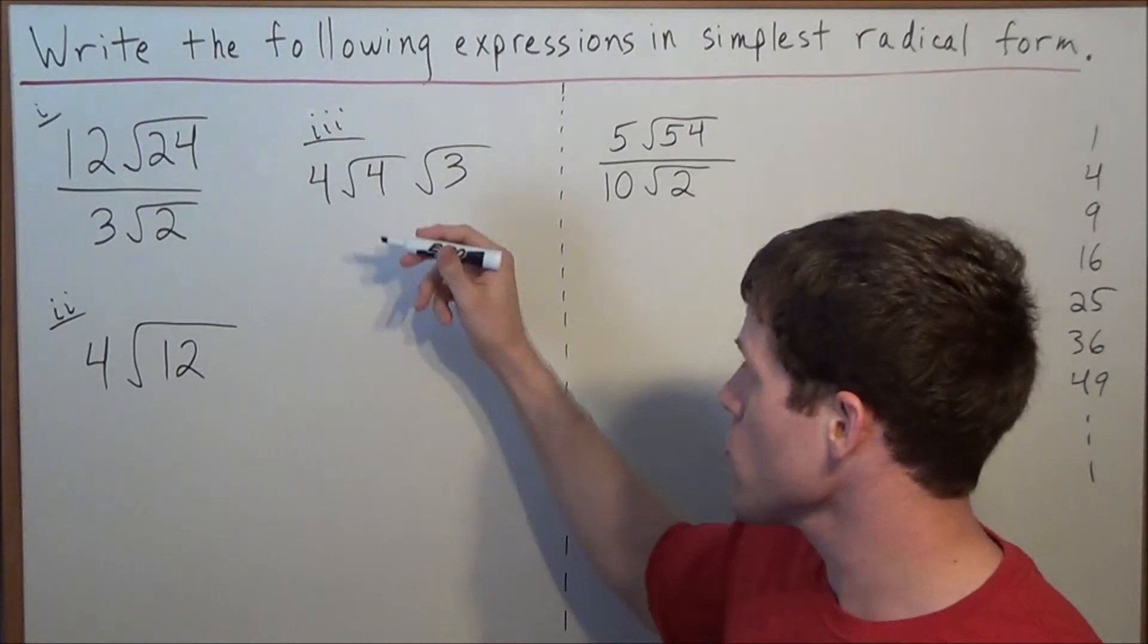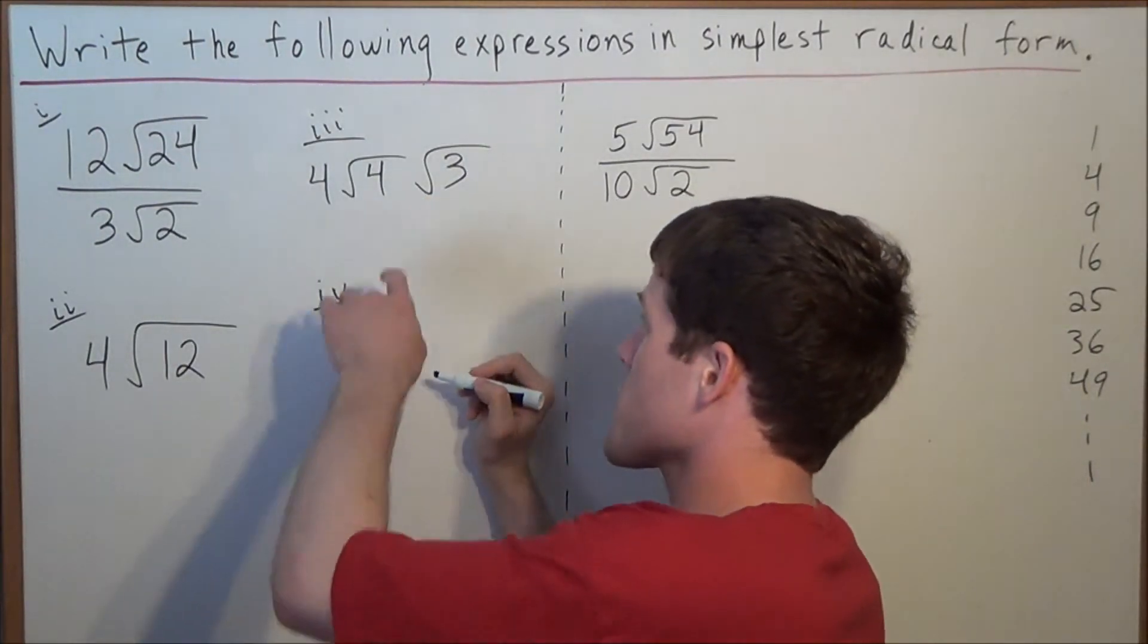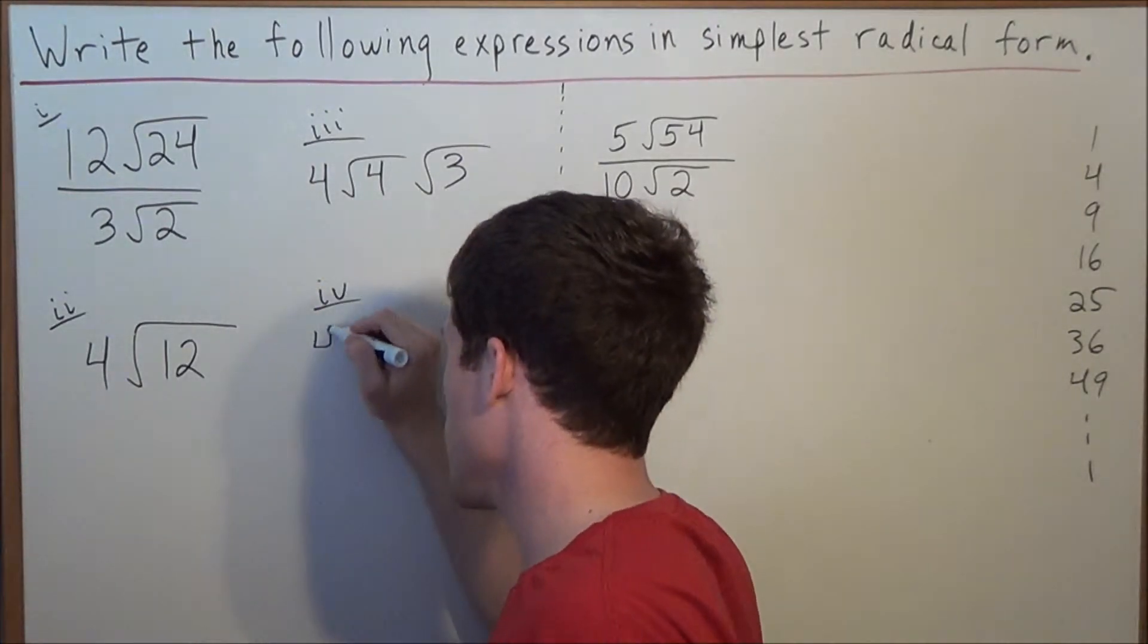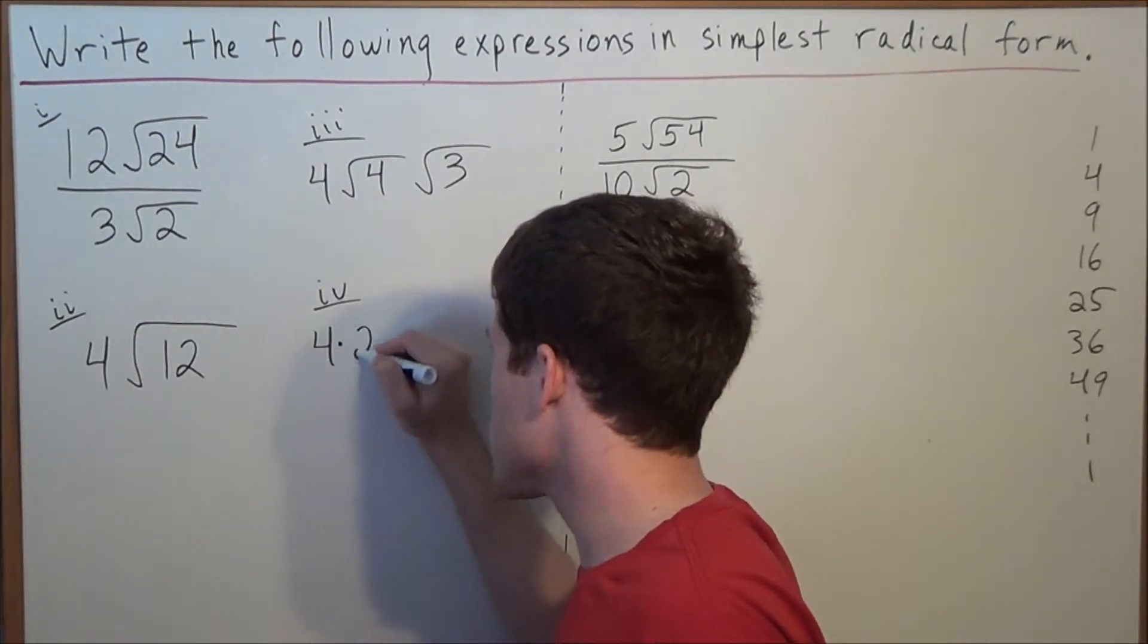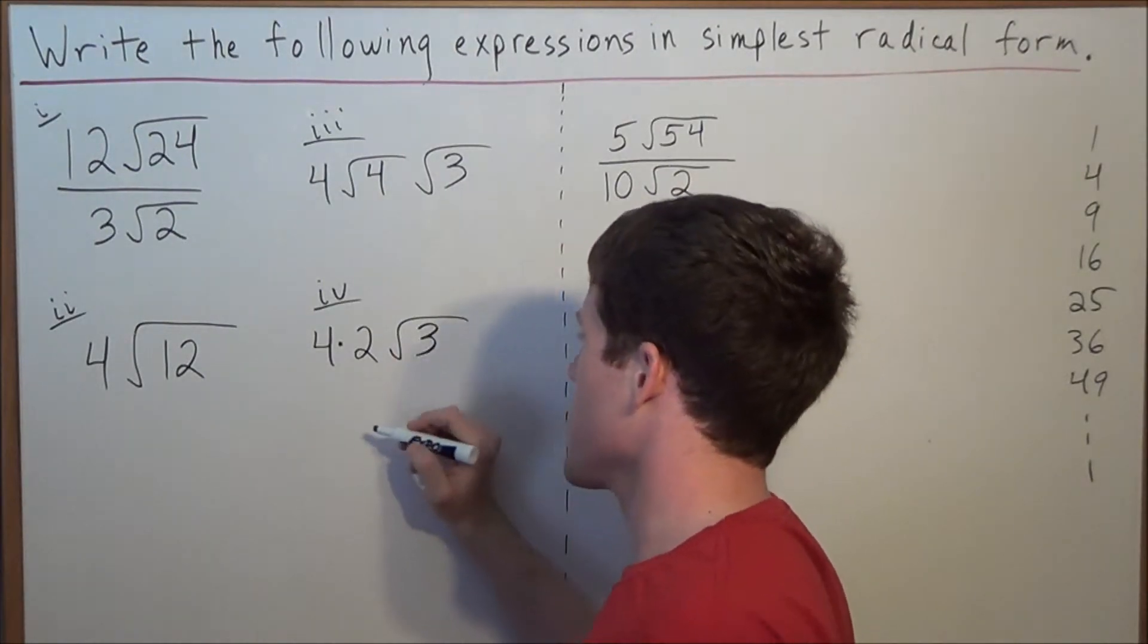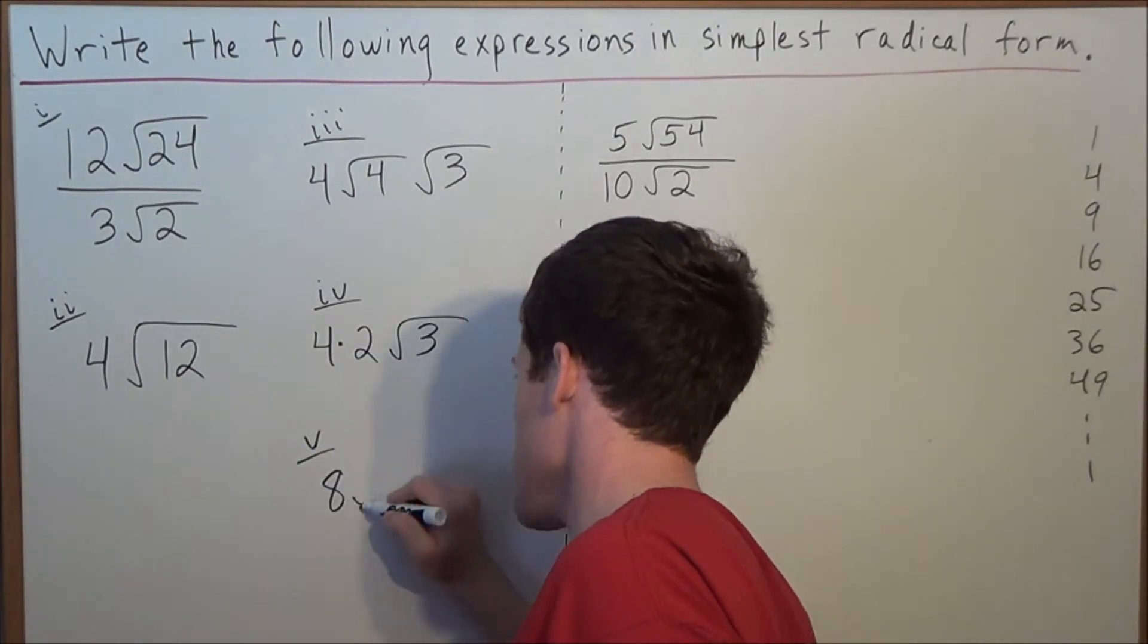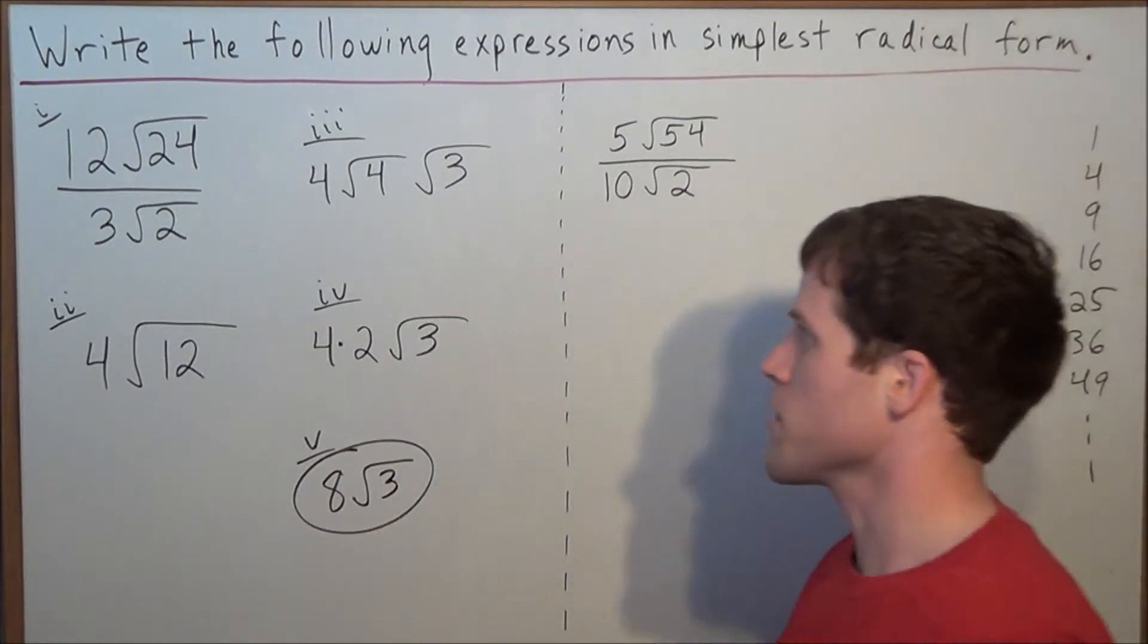But now the goal, or the reason behind this that we did this, was to get one of these radicals to simplify. And notice the square root of 4, the second piece, the square root of 4 is equal to 2. So we could write this as 4 times 2 times radical 3. So the final result, 4 times 2, gives us 8. So our final answer is 8 radical 3.